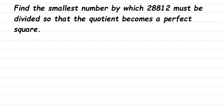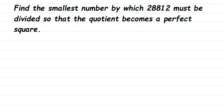Here's a question from squares and square roots: find the smallest number by which 28812 must be divided so that the result becomes a perfect square. This number is not a perfect square, and we have to make it a perfect square by dividing with the smallest number. So how do we find that smallest number?